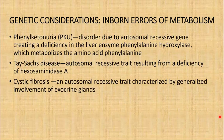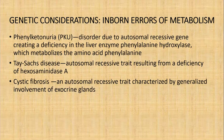There is also Tay-Sachs disease, which is an autosomal recessive trait resulting from a deficiency of hexosaminidase A. This results in apathy and regression in motor and social development, and also affects the eyes with decreased vision. Last but not least is cystic fibrosis, or fibrocystic disease of the pancreas, an autosomal recessive trait characterized by generalized involvement of exocrine glands resulting in altered viscosity of mucus-secreting glands throughout the body. All of these are autosomal recessive conditions.